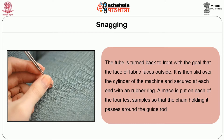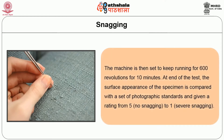The tube is slid over the cylinder of the machine and secured at each end with a rubber ring. A mace is placed on each of the four test samples so that the chain holding it passes around the guide rod. The machine is then set to run for 600 revolutions, totalling 10 minutes. At the end of the test, the surface appearance of the specimen is compared with a set of photographic standards and given a rating of 1 to 5, where 5 represents no snagging and 1 represents severe snagging.